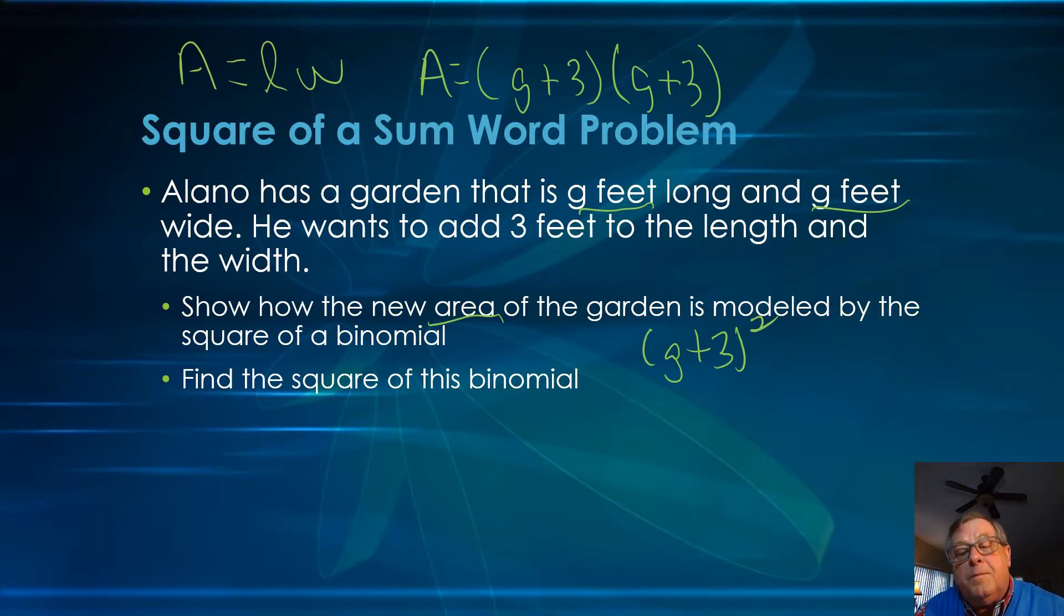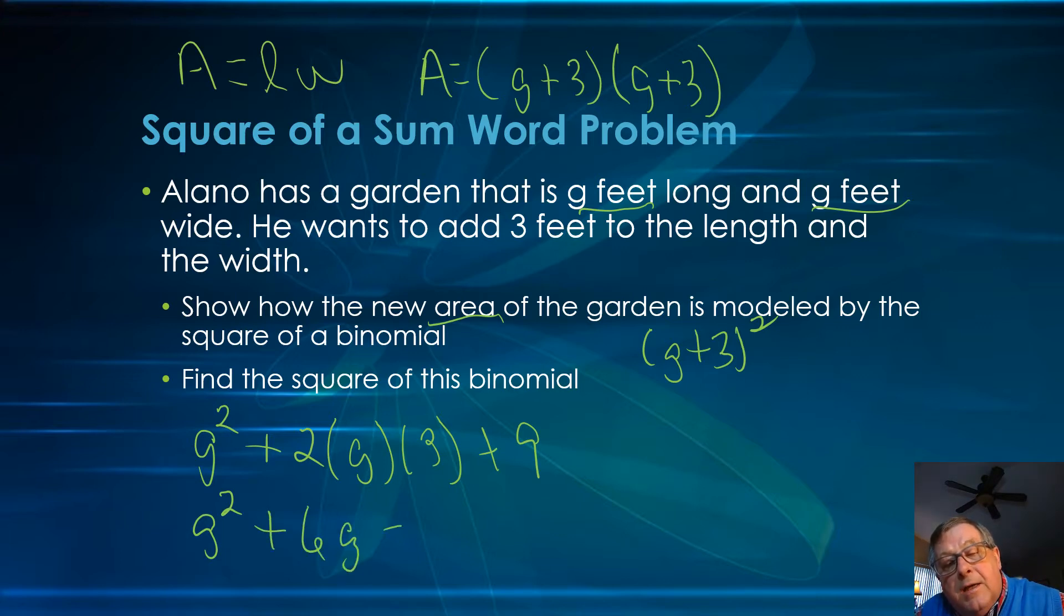Then it says find the square of this binomial. Well, of course, what we learned is that that would be g squared plus two times g times three plus nine. We square three. So we got g squared plus two times g times three plus nine. And we just do a little work on that middle term. Two times g times three gives us six g. And so the square of this binomial is g squared plus six g plus nine.